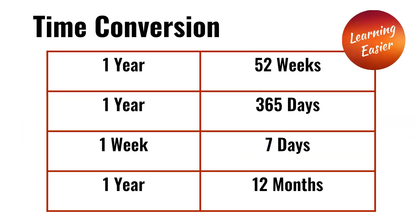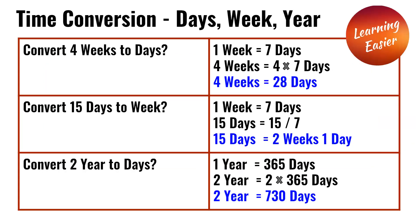Time conversion. One year is equal to 365 days. One week is equal to seven days. And one year is equal to 12 months. Days, week, and year.